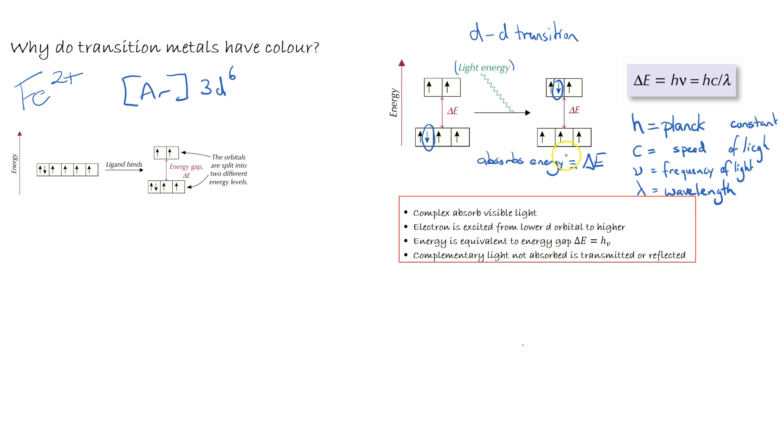The energy difference there is equivalent to the energy gap, which is delta E equals H nu, where H is a Planck constant, nu is a frequency of light, and that can be rearranged for H, Planck constant, multiplied by the speed of light divided by the wavelength. And then the observed colour is a complementary light which is not absorbed, which we see is transmitted or reflected.